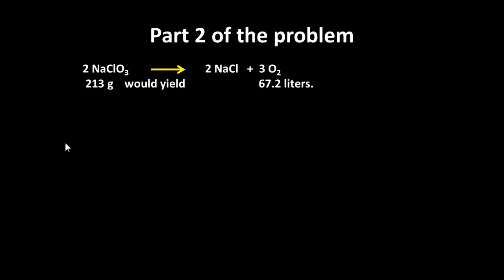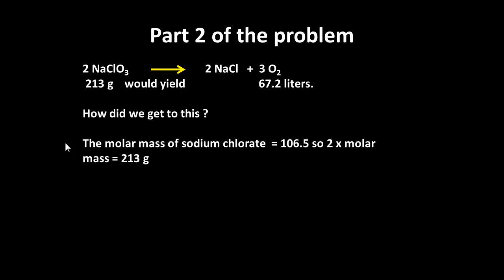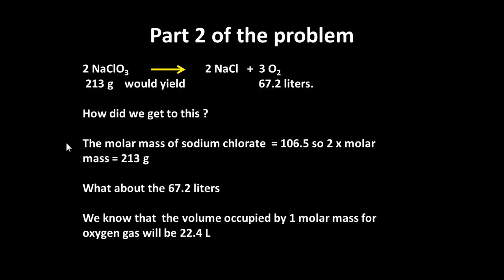Where do these numbers come from? The molar mass of sodium chlorate is 106.5, and there are 2 lots, so twice the molar mass is 213 grams — that explains where the 213 grams of sodium chlorate comes from. For the 67.2 liters of oxygen: the volume occupied by 1 molar mass of oxygen gas is 22.4 liters, and there are 3 lots of oxygen, so 3 times 22.4 gives 67.2 liters.